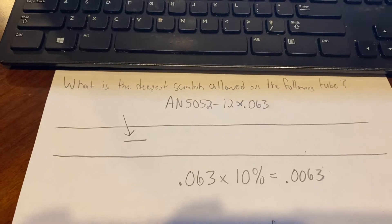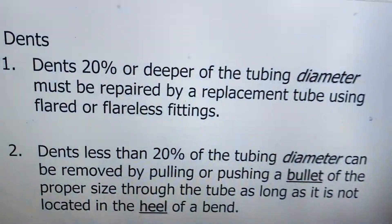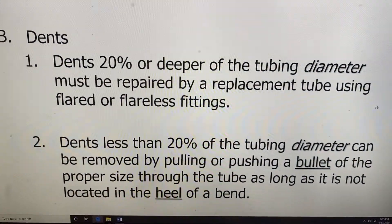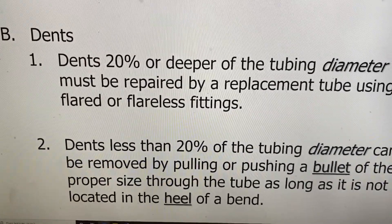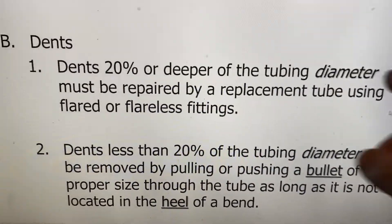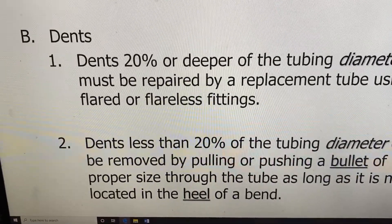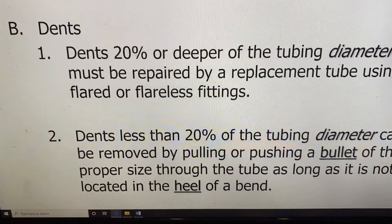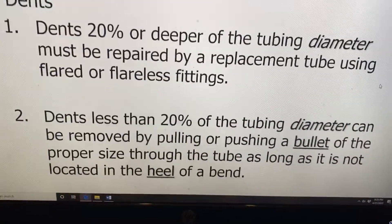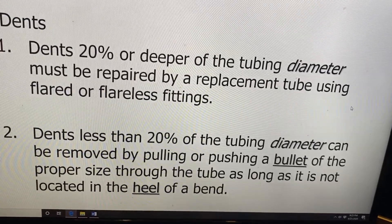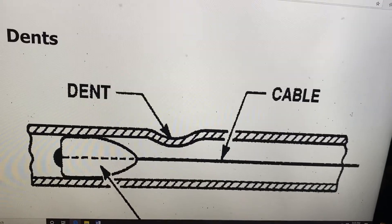Now let's try dents. Let's say something impacted a line and dented the tube. When it comes to dents, you're not concerned with wall thickness, you're concerned with outside diameter. Dents of 20% or deeper of the tubing outside diameter must be repaired by a replacement tube. If they're less than 20%, it still needs to be repaired, but it's a lot easier process — it has to do with pulling a bullet-shaped piece of metal through the tube to remove the dent.